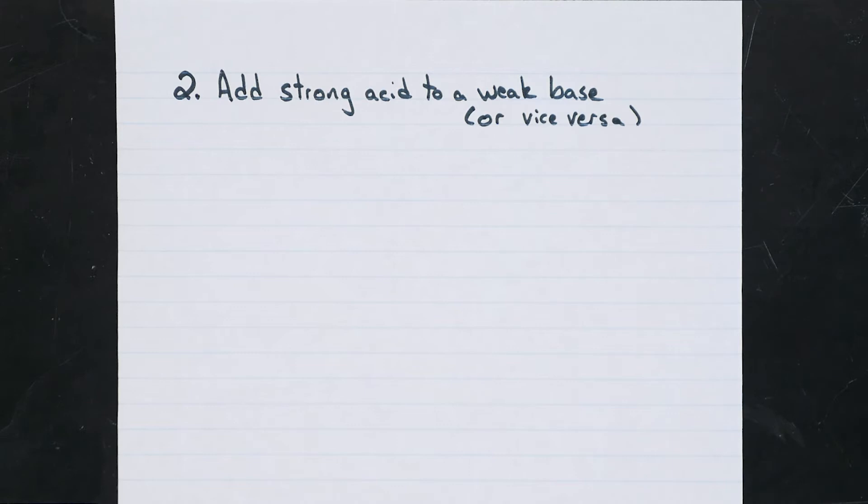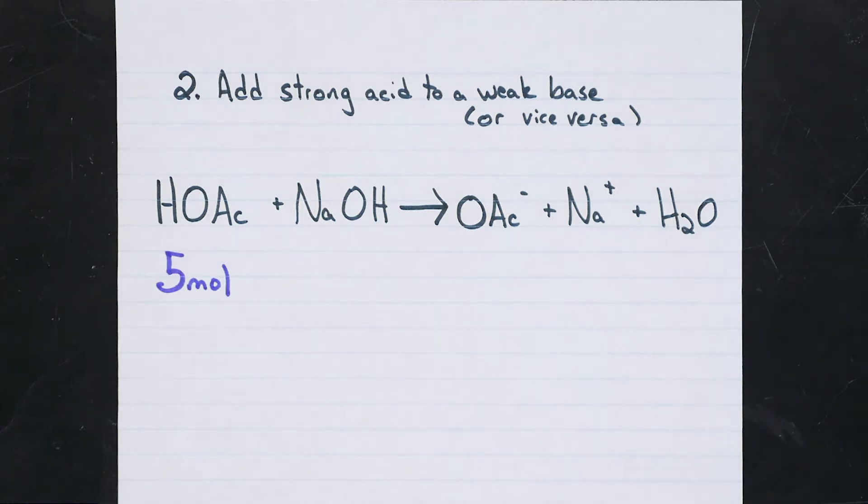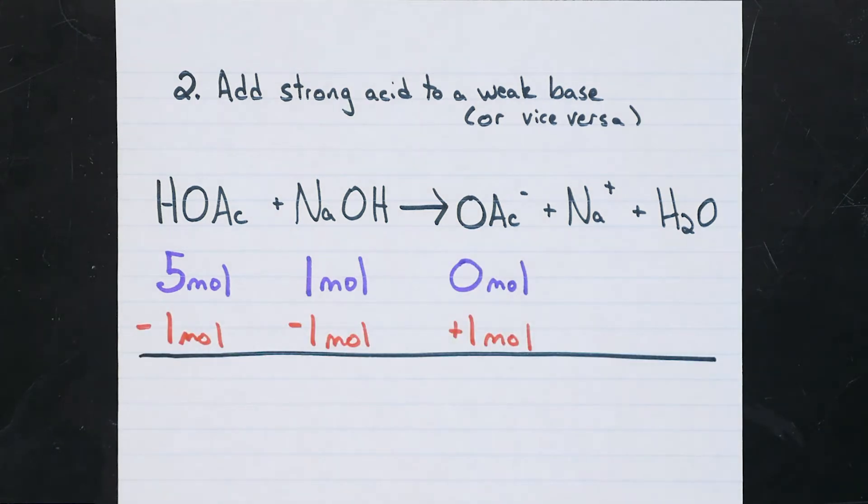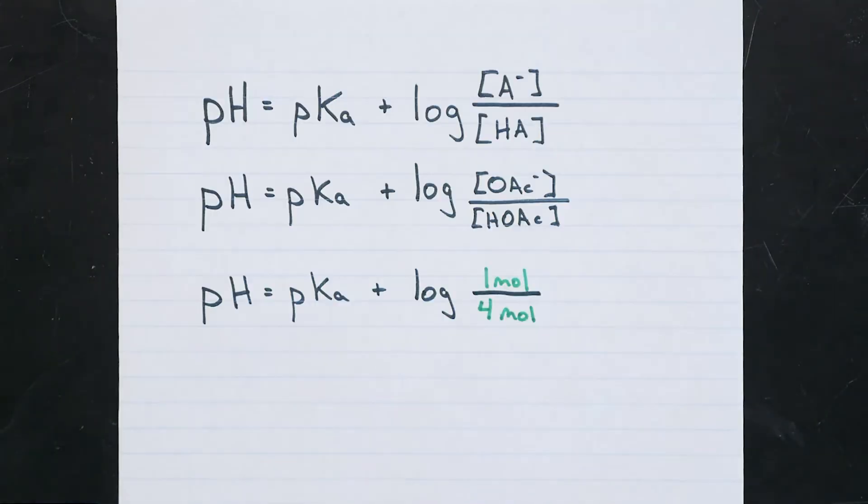Alternatively, we can have only one of the conjugates and add a strong acid or base to it, and convert some of it directly to its conjugate. So if we had, say, five moles of a weak acid, like acetic acid, adding one mole of a strong base, like NaOH, will convert exactly one mole of the weak acid to its conjugate base. That would leave us with four moles of weak acid remaining, and one mole of its conjugate base formed. So we've got a buffer, and again, we know the number of moles of each conjugate acid and base, so plugging them into the Henderson-Hasselbalch equation determines the expected pH.